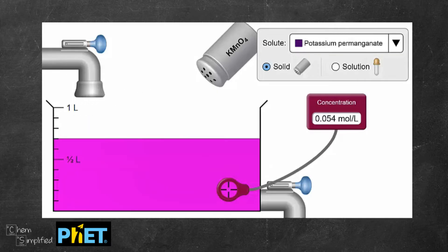So throughout the dilution, the amount of potassium permanganate did not change. I didn't remove any of it or add any more KMnO4 solid to the solution. The only thing that was added was just water which is the solvent in this case.